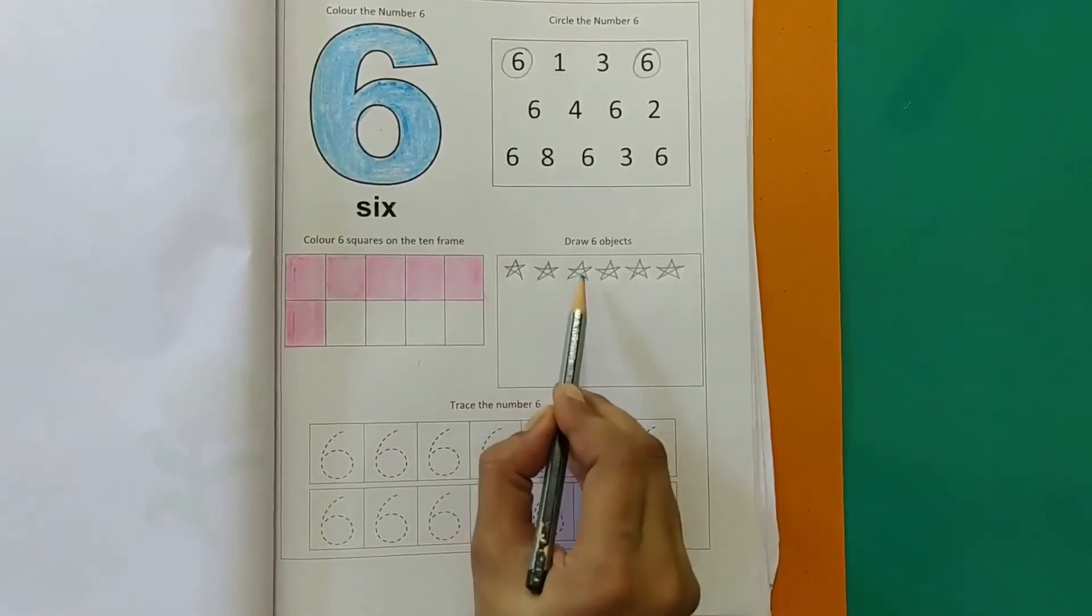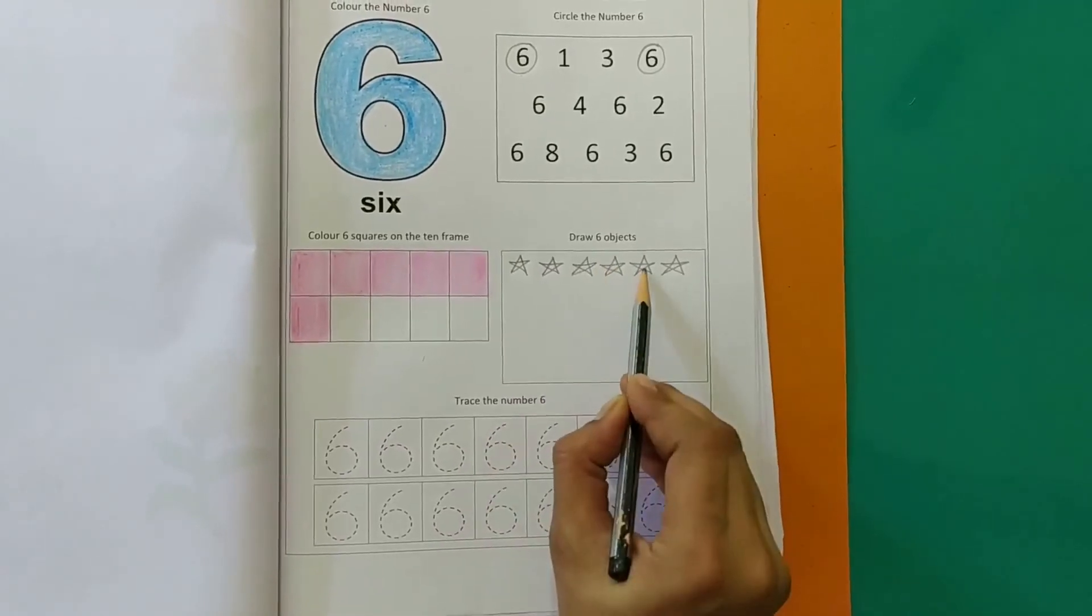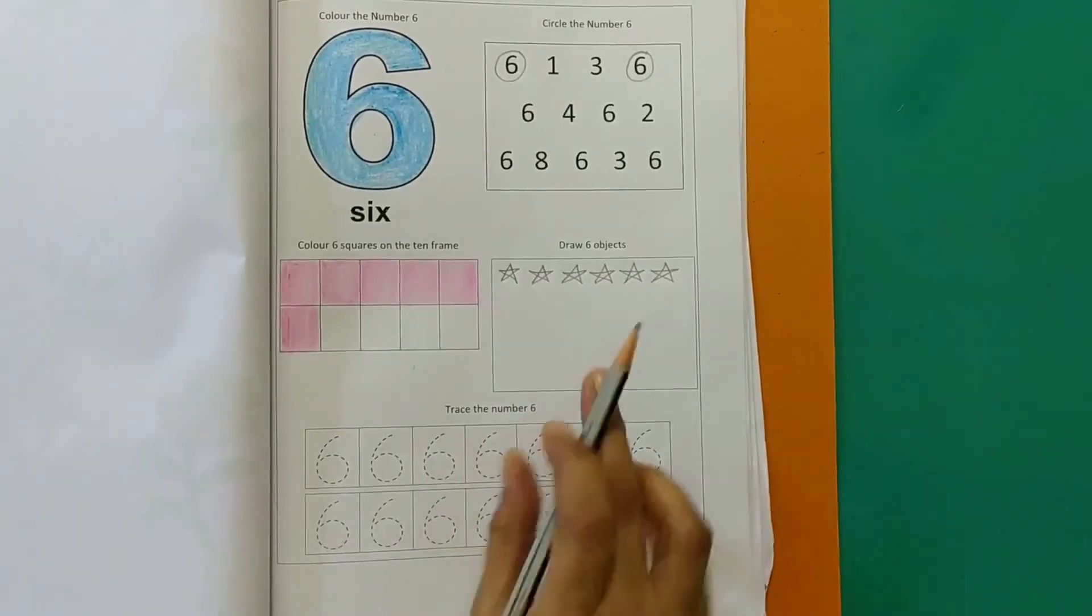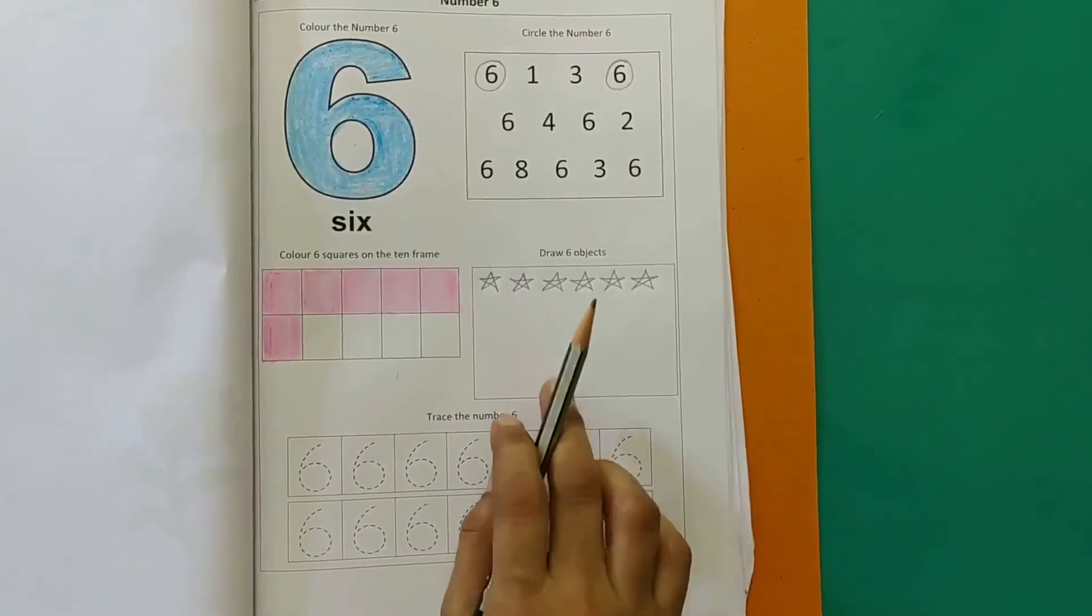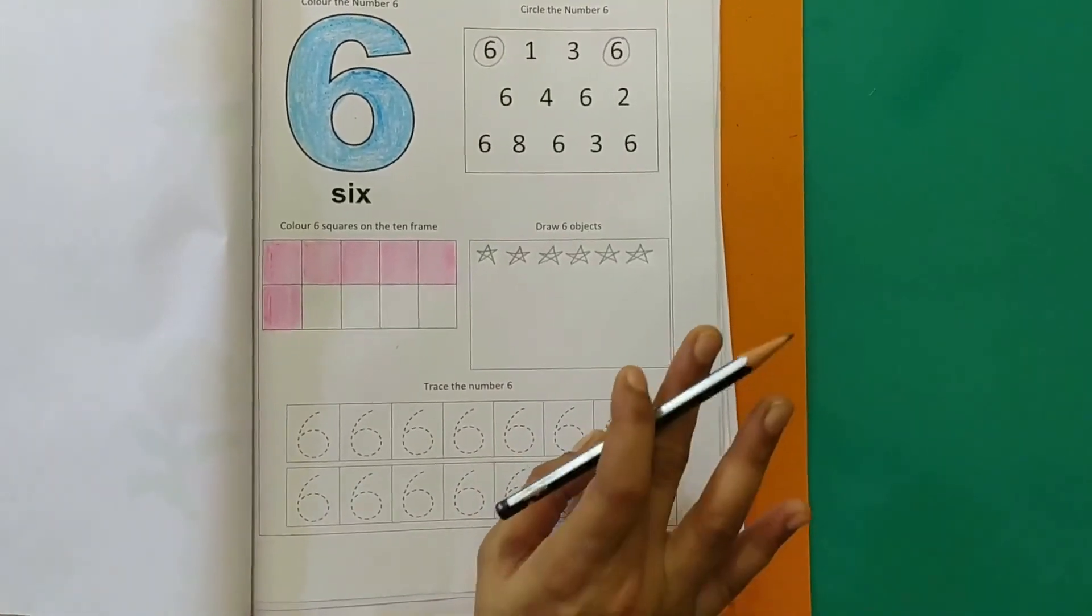1, 2, 3, 4, 5, 6. So this is your activity, wherein you have to draw 6 objects of your choice.